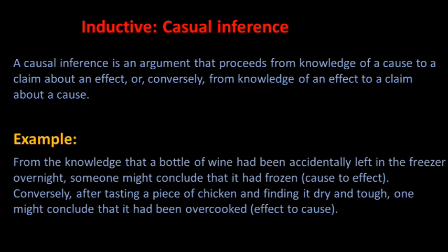A causal inference is an argument that proceeds from knowledge of a cause to a claim about an effect, or conversely, from knowledge of an effect to a claim about a cause. For example, from the knowledge that a bottle of wine had been accidentally left in the freezer overnight, someone might conclude that it had frozen — cause to effect. Conversely, after tasting a piece of chicken and finding it dry and tough, one might conclude that it had been overcooked — effect to cause. Because specific instances of cause and effect can never be known with absolute certainty, one may usually interpret such arguments as inductive.